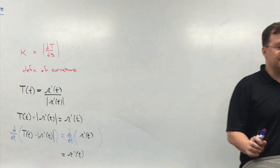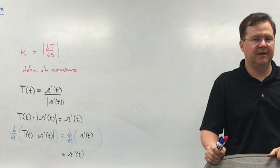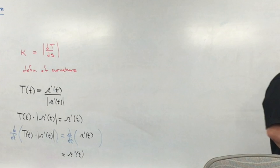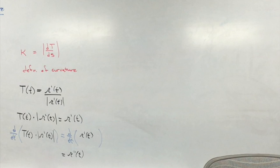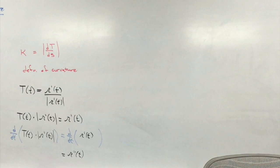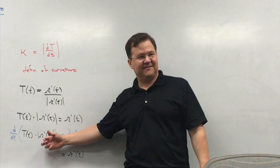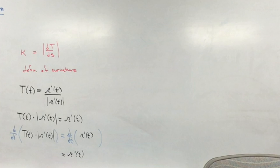There are some properties of these functions, and we had three types of product rules. They ended up looking the same, but they were saying different things. One of them was when you had a normal real-valued function multiplied by a vector-valued function — which is a scalar multiplication. The other one was a vector-valued function dotted with a vector-valued function, and a vector-valued function crossed with a vector-valued function. The magnitude of R of T is just a scalar, and the tangent vector is the vector.